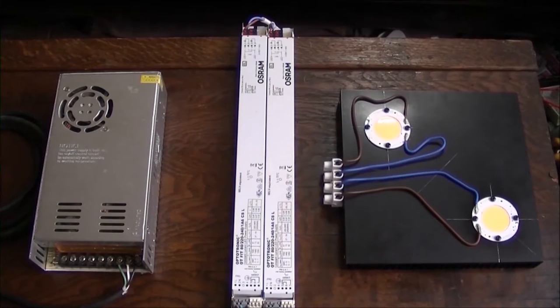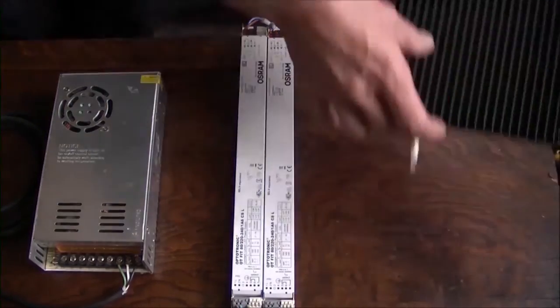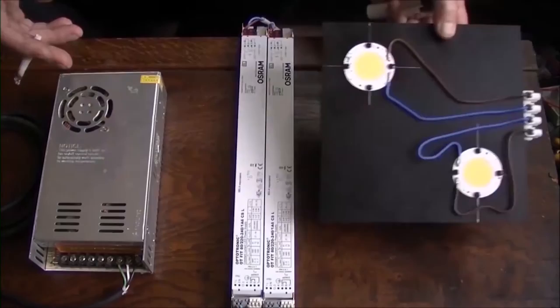So here's the equipment that we're going to be working with today. We have two Vero cobs, Vero E29 cobs, a couple of Osram drivers and a variable voltage bench power supply. You'll see it quite a lot in the other videos.